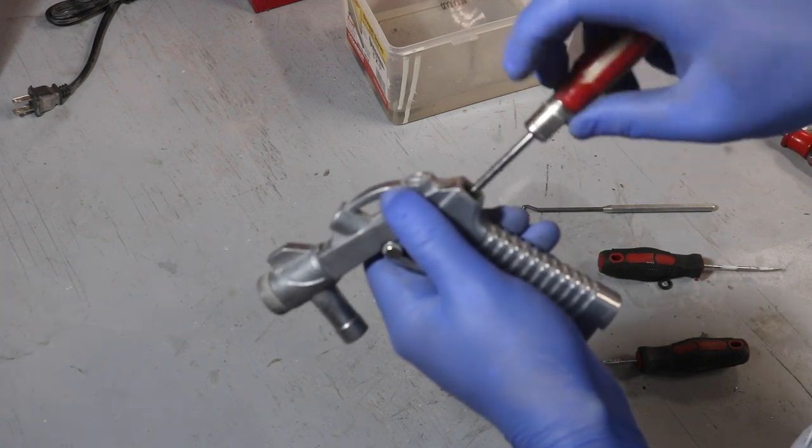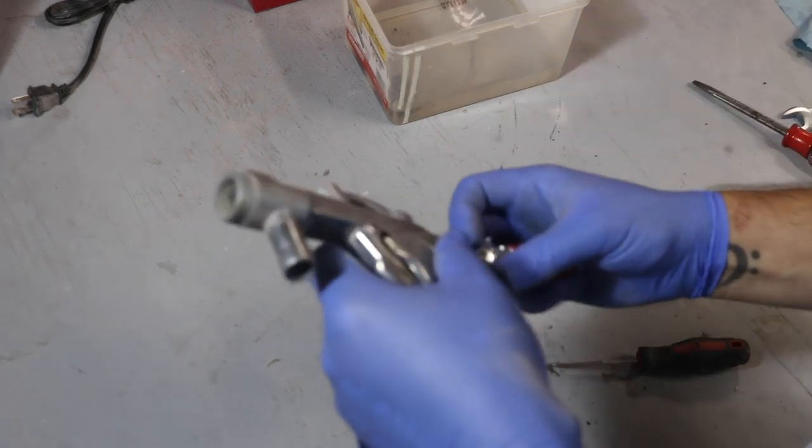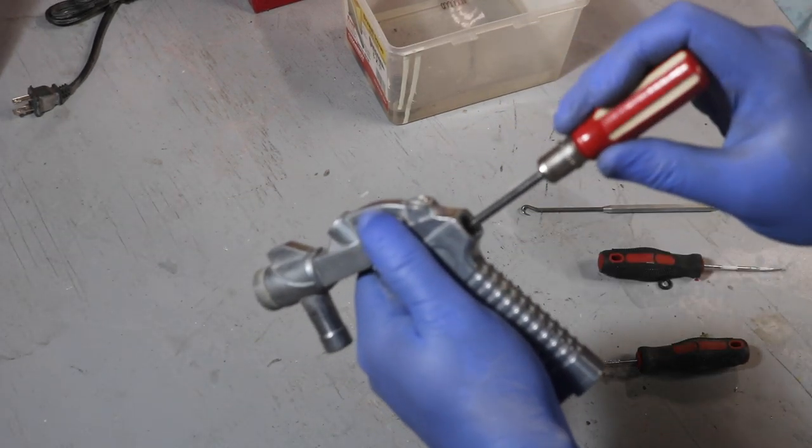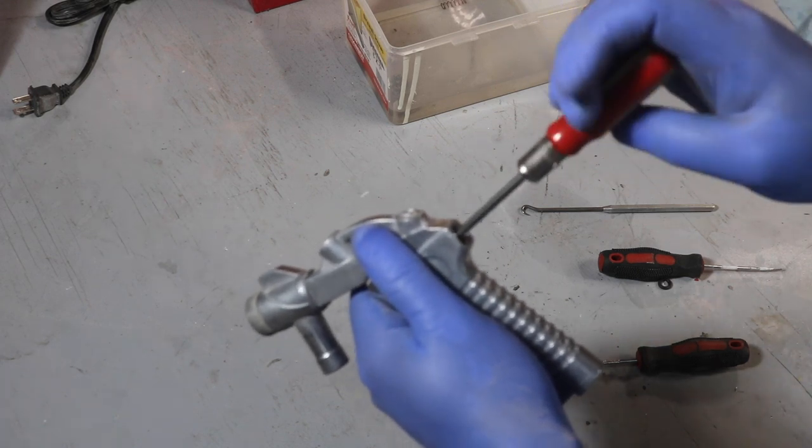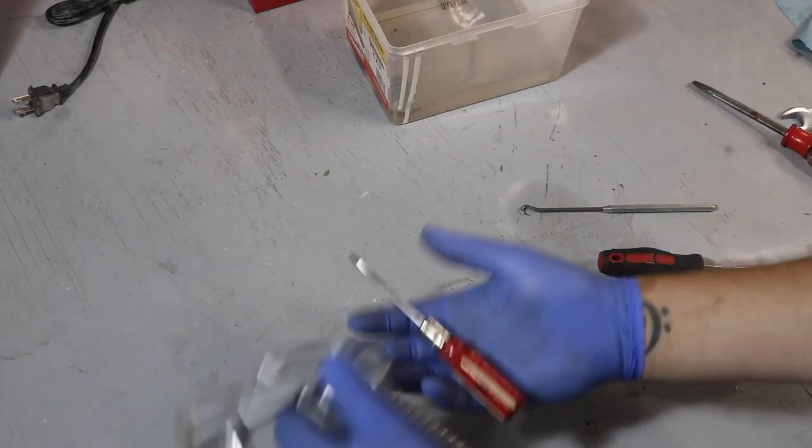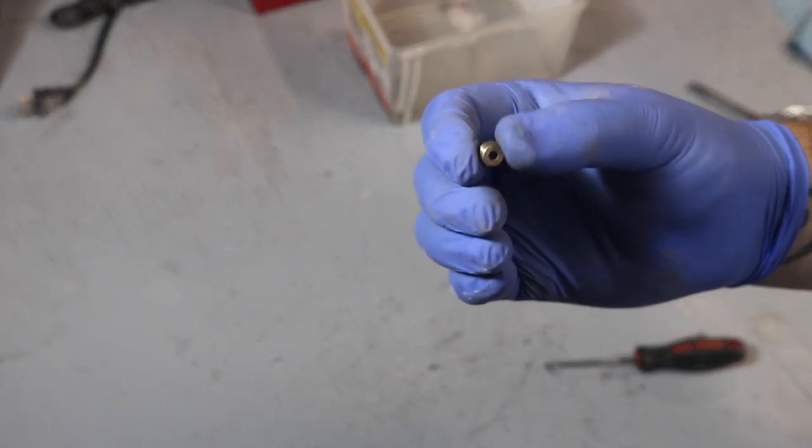There are also a couple of bushings that the stem of the valve seats up against and is aligned by, and honestly, I don't believe you need to remove them to clean everything out. I ended up removing both of them, which wasn't necessary. I think it was an extra pain.